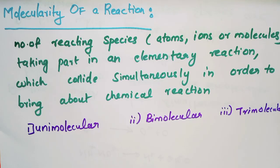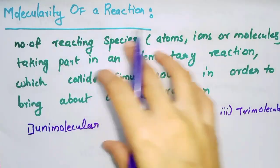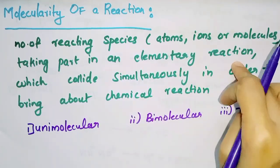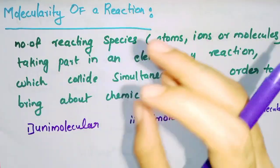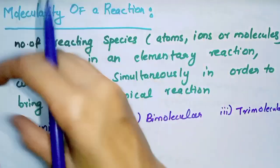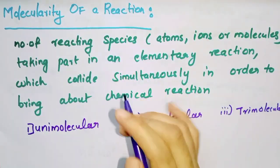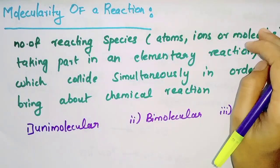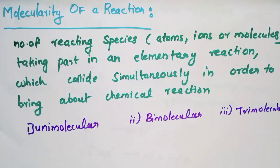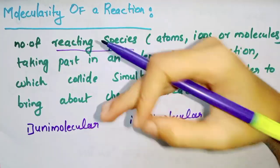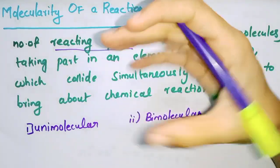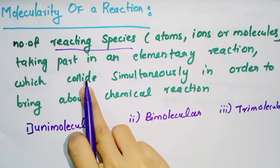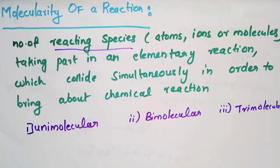I will ask you a question about molecularity of the reaction. The number of reacting species that take part in an elementary reaction — for example, the chemical reaction N2 plus 3H2 gives 2NH3. The reacting species can be atoms, ions, or molecules. That is molecularity — the number of reacting species which collide simultaneously in order to bring about the chemical reaction.